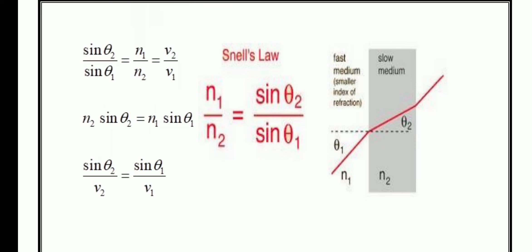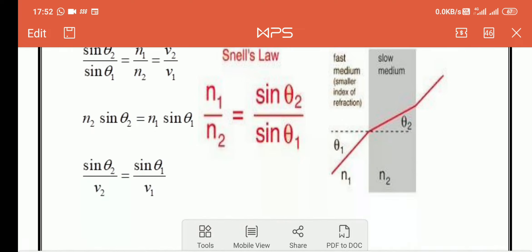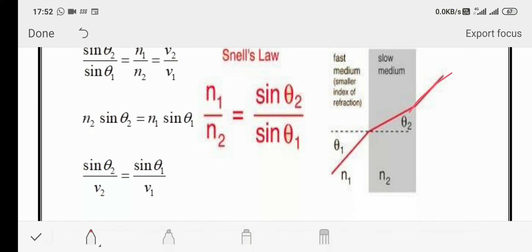Light comes and falls on the first surface, then due to the change in refractive index it changes direction, and again on the second surface it changes direction again. Here theta₂ is the angle of incidence and theta₁ is the angle of refraction.